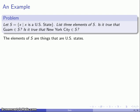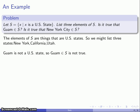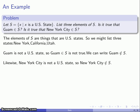The elements of S are things that are U.S. states. Let's list a couple: New York, California, Utah—those three are U.S. states. On the other hand, Guam is not a U.S. state, so Guam being an element of S is not actually a true statement. We can write this in set notation as Guam ∉ S. By a similar argument, New York City is not a U.S. state, so New York City also is not an element of S.